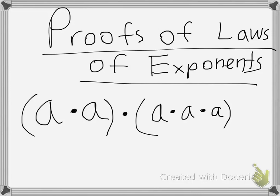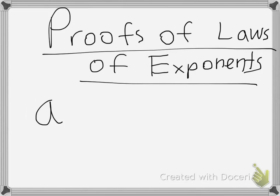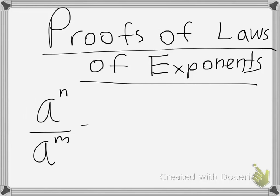That was easy. Now let's prove the second law of exponents, which is a to the n over a to the m equals a to the n minus m.